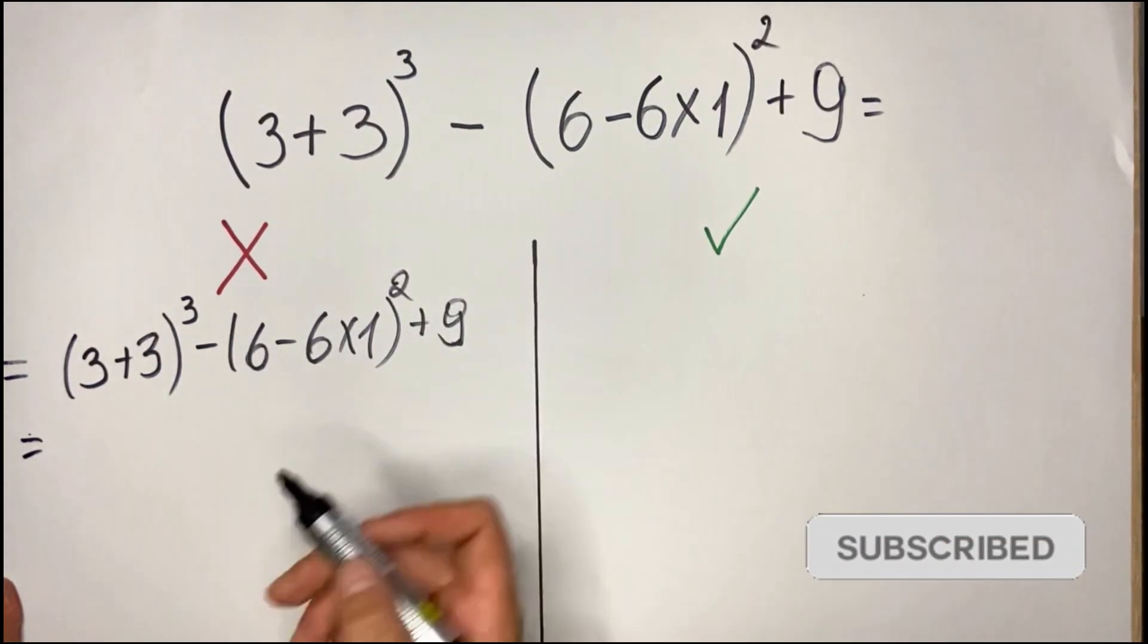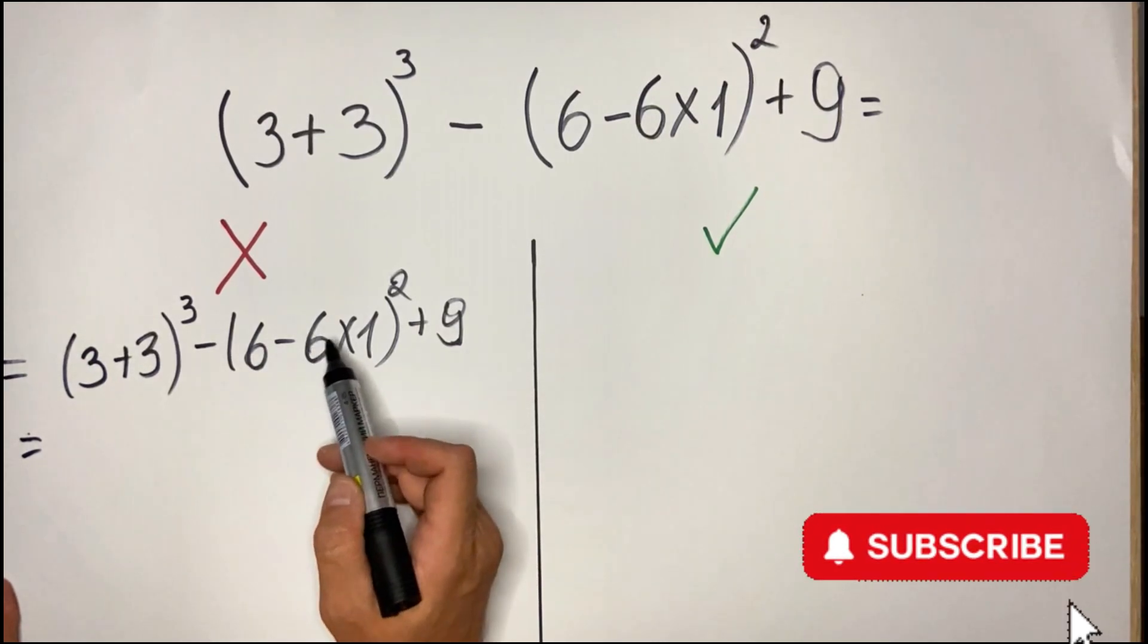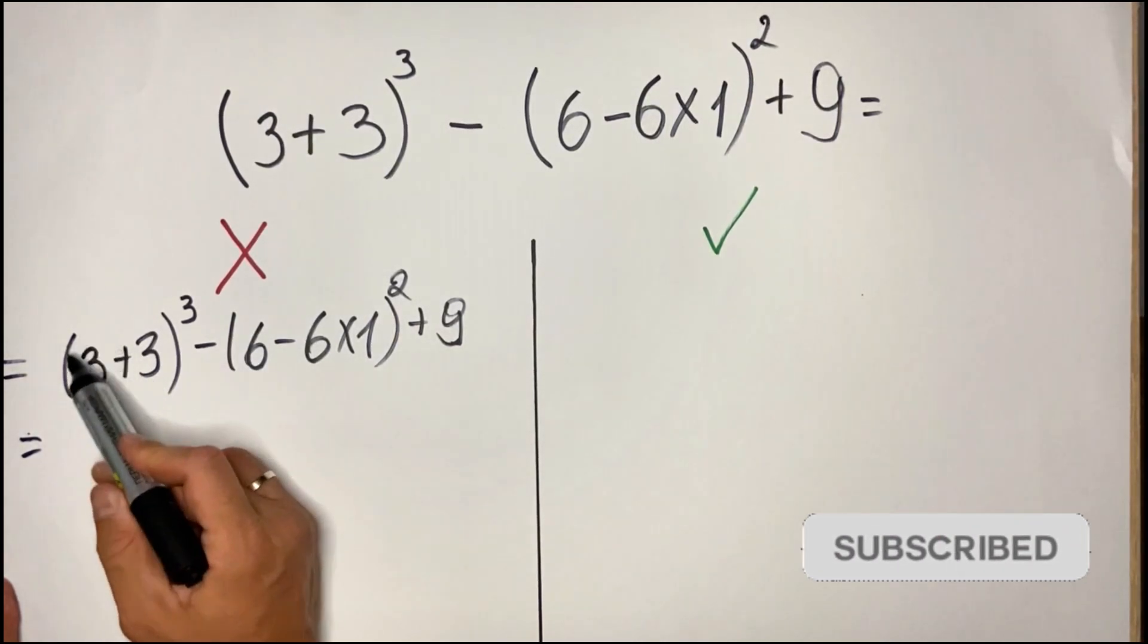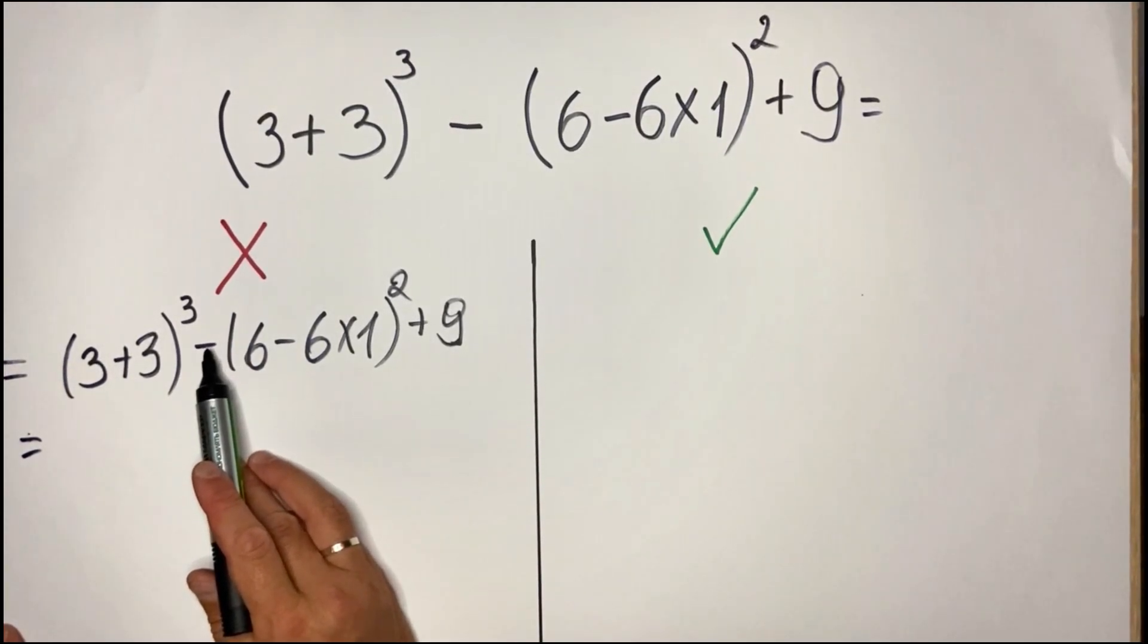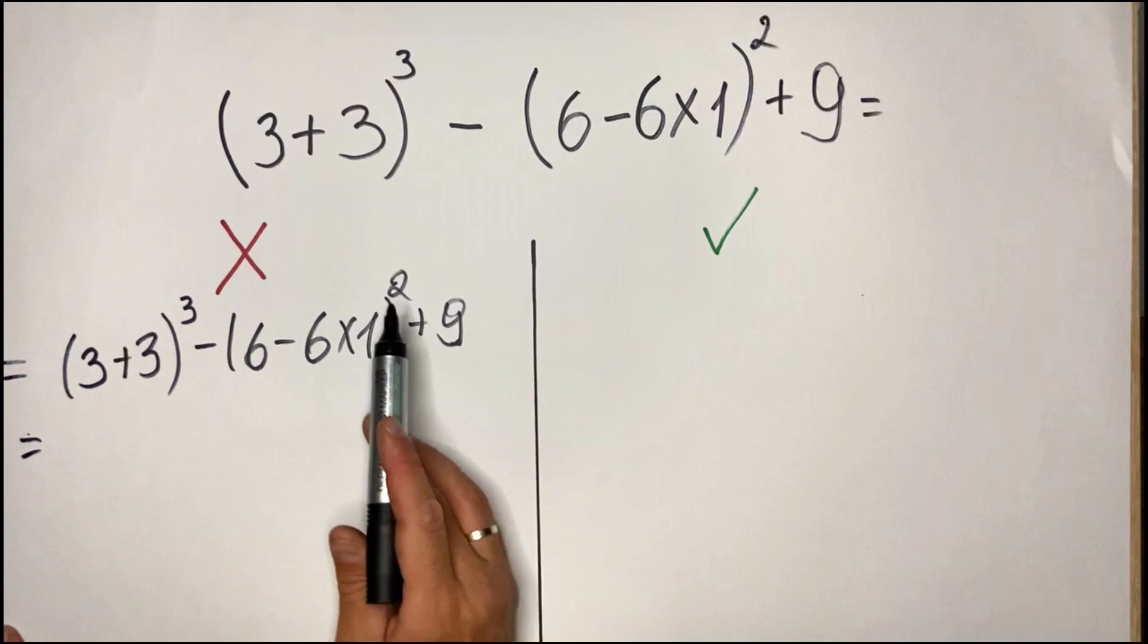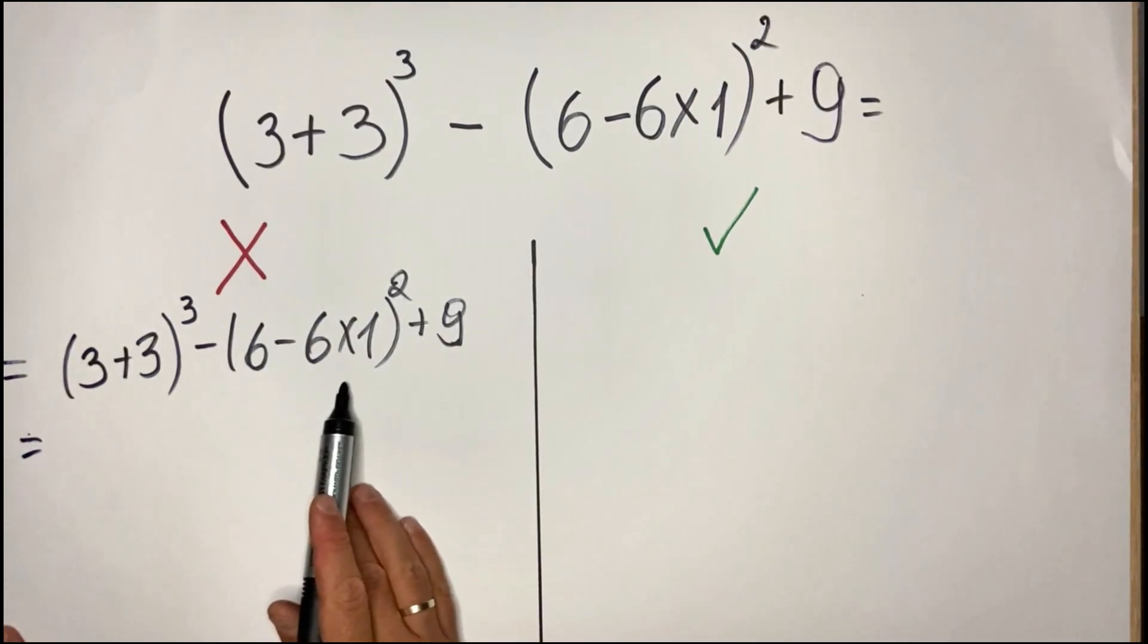So what most people would do here instead of doing the parenthesis—here they will do it correctly because there's no tricky question here. You have straightforward subtraction and addition, but the tricky part is really here.